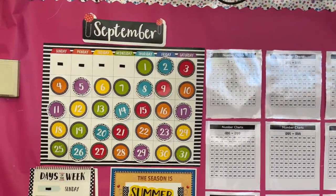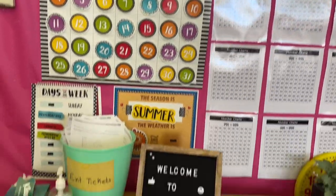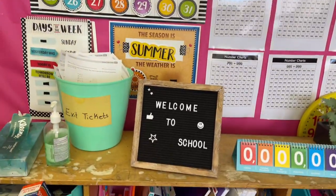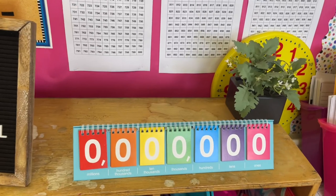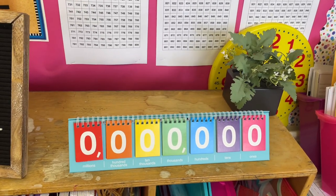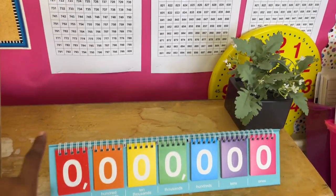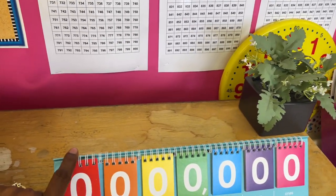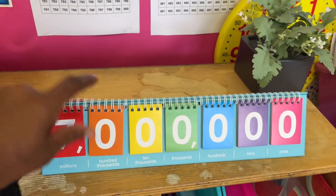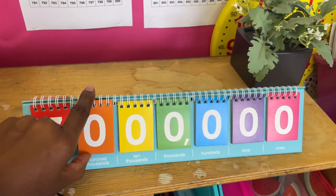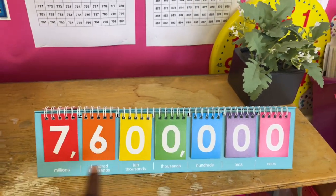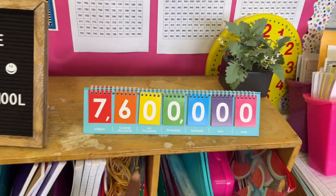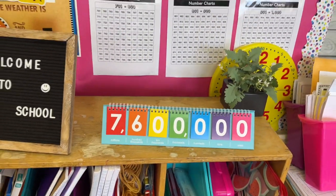So it's September. I also have my little welcome to school sign. I also have my place value flip chart — this is very good for building that number sense as well. We go up to the thousand, so this is wonderful. I just added this this year.